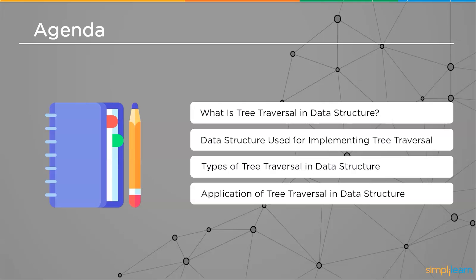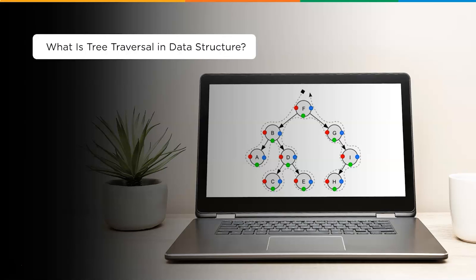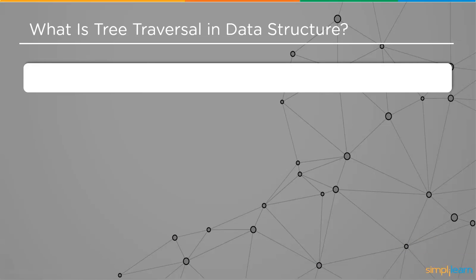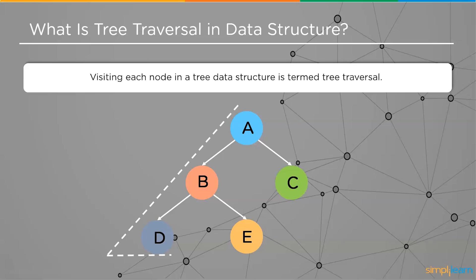Let's get started with our first topic: what is tree traversal in data structure? Tree traversal is a process of visiting each and every node in a tree data structure. Here on screen we have a tree with different nodes — A, B, C, D, and E — and we will be visiting all the nodes one after the other using tree traversal methods.